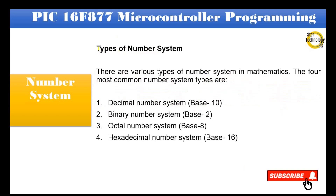Types of number system: There are various types of number system in mathematics. The four most common number system types are: 1) Decimal number system — Base 10, 2) Binary number system — Base 2, 3) Octal number system — Base 8, 4) Hexadecimal number system — Base 16.